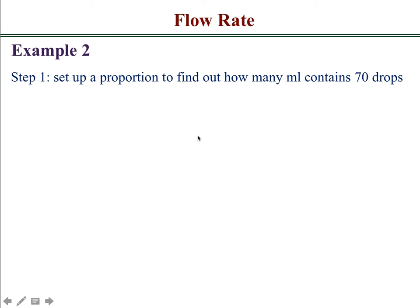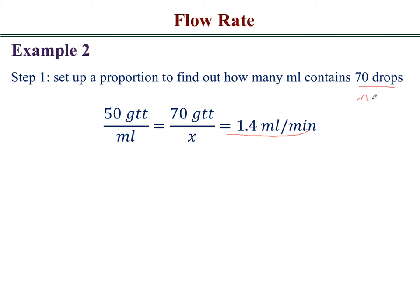The first step is to set up a proportion to find out how many ml contain 70 drops. Since there's 50 drops in every 1 ml, 70 drops contains 1.4 ml. And since 70 drops are being done per minute, you can just convert that over to 1.4 ml per minute.